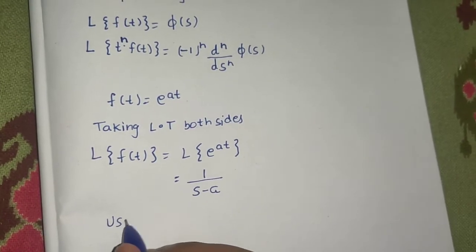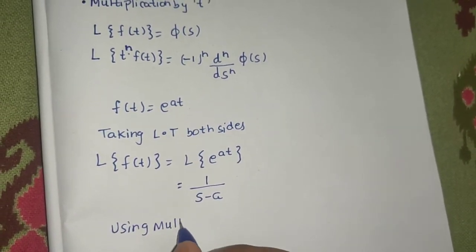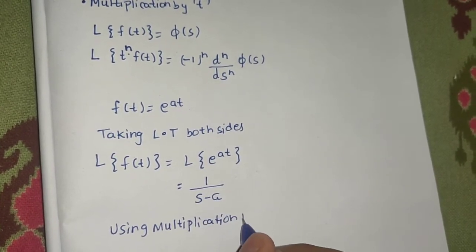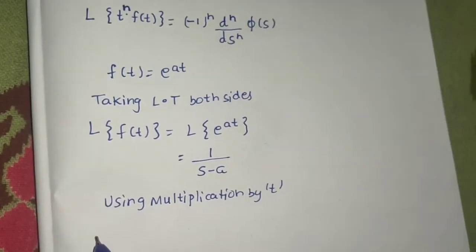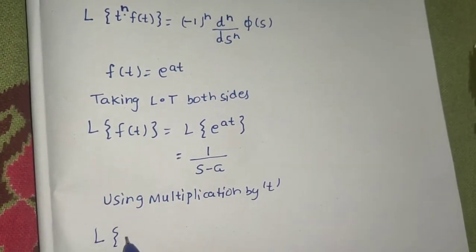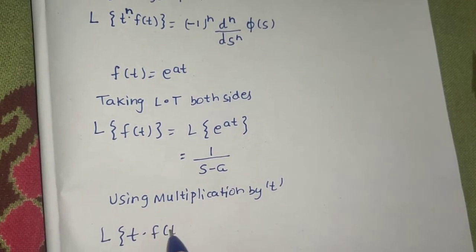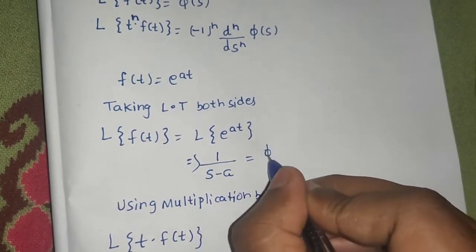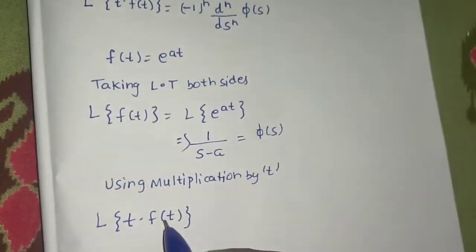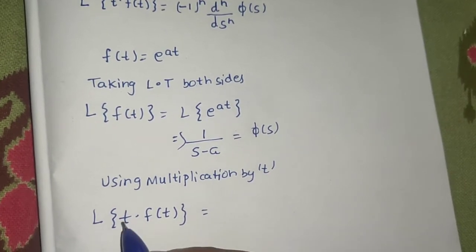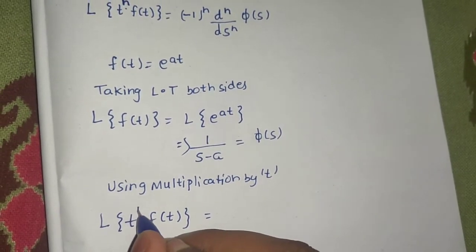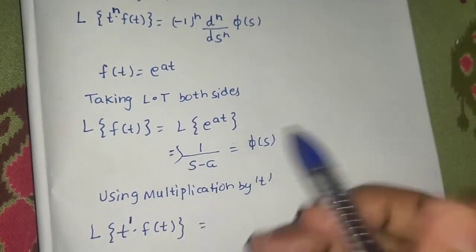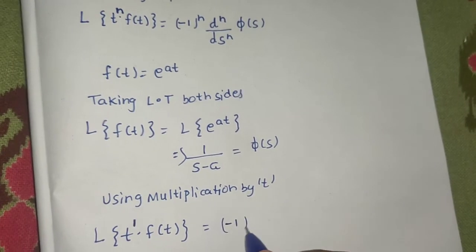Using multiplication by t, what we will get? Laplace of t times ft. Now, this you have got is nothing but your phi of s. T times ft, you can also write this as t power 1 ft. That means n value is 1 here. So, minus 1 power 1.